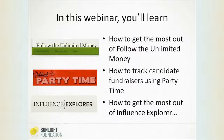We're going to show you a site that we do called Follow the Unlimited Money, which is really good for tracking outside spending. The focus is on how you can use these tools quickly to get information, add context, get a number, or figure out who a group is that's suddenly spending in your area. We'll also cover Influence Explorer, which brings together a lot of different campaign finance and lobbying data — so if there's a big contributor suddenly giving to a congressional race, you can find out who they are and get some background on what they may be interested in.